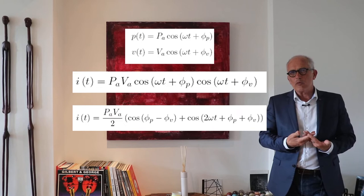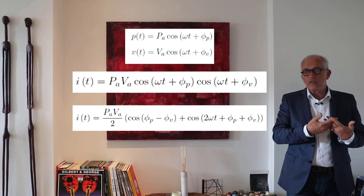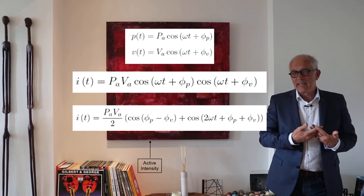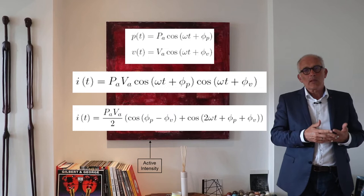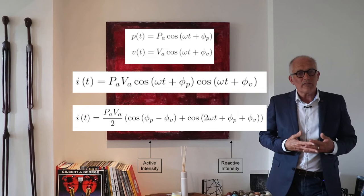I see that the intensity contains, exactly like before, two components. One component that is constant and represents the active intensity, which means a constant flow of power from the source to a receiver. While the second term has a pulsation in this case of 2ωt and a zero mean.